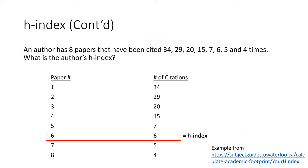Here's an easy way to manually calculate your H-index. Organize papers in descending order based on the number of citations for each paper. For example, an author has eight papers that have been cited these times. What is her H-index? We organize her papers with the number of citations from the most to the least. The first paper has been cited 34 times and gives us a 1. The second paper has been cited 29 times and gives us a 2. The third paper gives us a 3, and all the way up to 6 with the sixth highest paper. So, her H-index is 6.